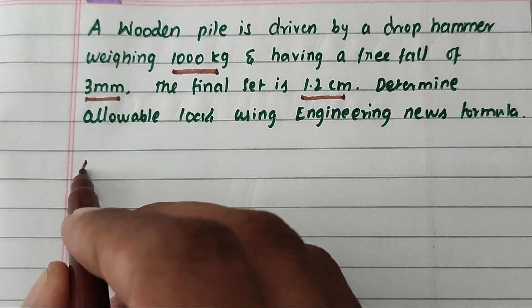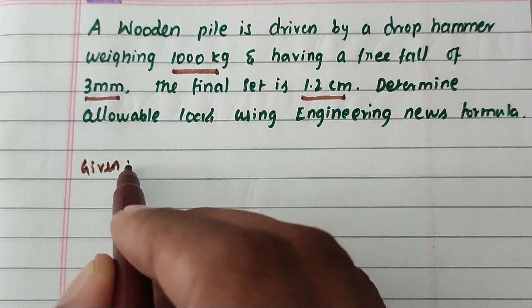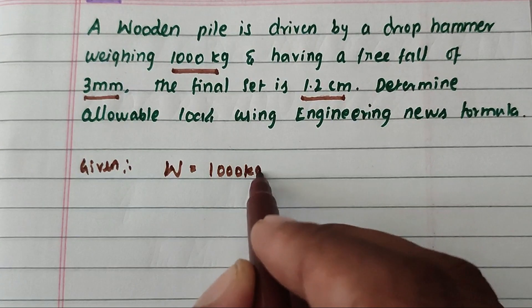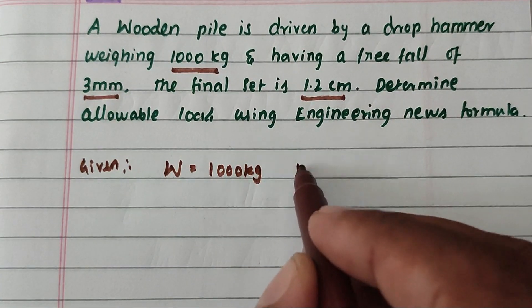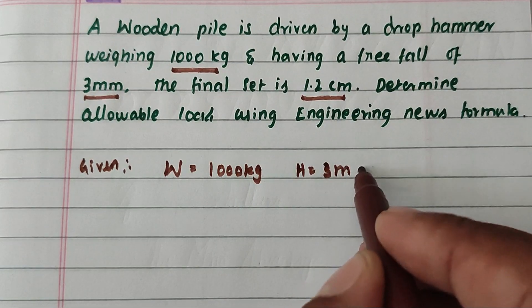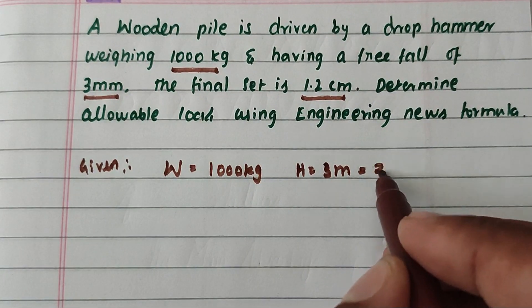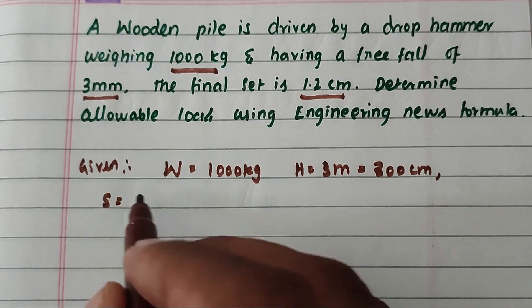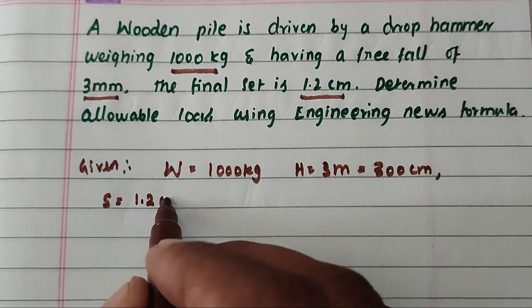Given values: W = 1000 kg, H = 3 meters = 300 cm, S = 1.2 cm.